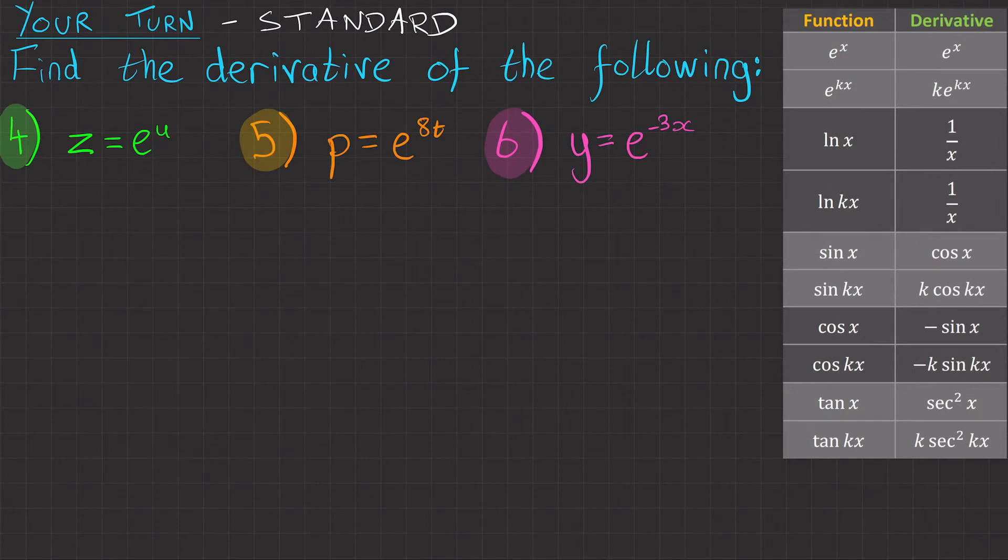Second set of questions. Question four, we've got z equals e to the u. So this is using this function here and derivative. So dz/du equals e to the u. And that's it.